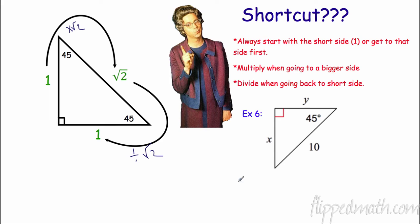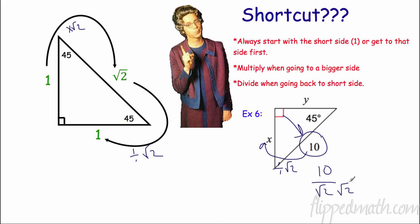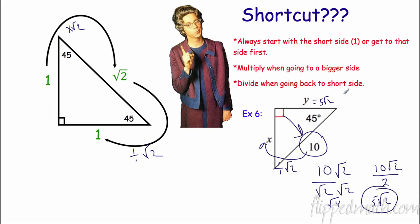The 45-45-90 triangles are fairly easy on their own; it gets trickier when you mix them together, and both types will be on the homework and mastery check. Here I have the hypotenuse — the long side across from 90° — so to get the short side I divide by √2: 10/√2. Rationalizing gives 10√2 over √4 = 10√2/2 = 5√2. So x and y are both 5√2.